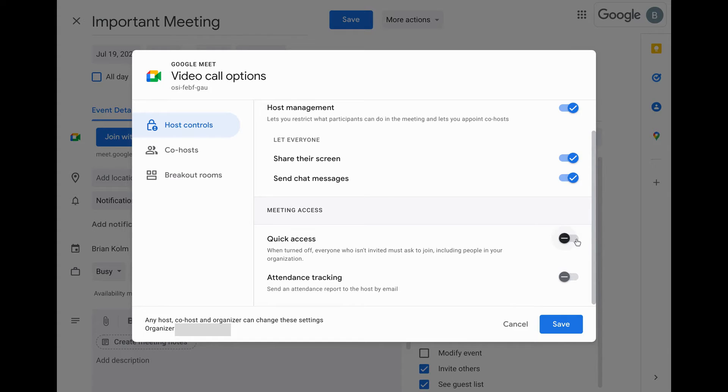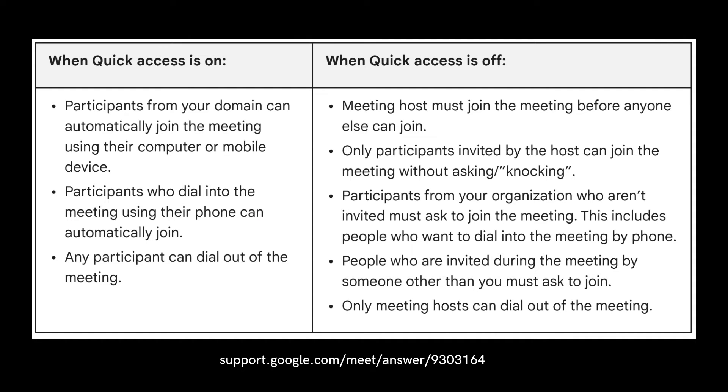Back on the host controls tab, you can also turn on quick access. When you have quick access turned on, your invited meeting guests can join the meeting before you or any of your co-hosts. If you want to control when people join the meeting, turn quick access off. Note that if you don't have the quick access setting, any meetings that you organize will have participant access enabled by default.